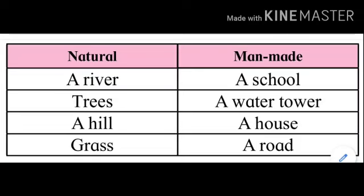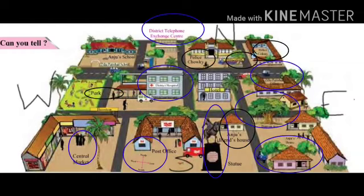You can see this picture of Anju's house and the surrounding. You can see the four main directions: East, West, North, and South. We can see Anju's house in the Southeast direction. We can see a banyan tree near the East direction. We can see the statue of Shivaji Maharaj in the South direction. Anju's friend's house is also in the South direction.